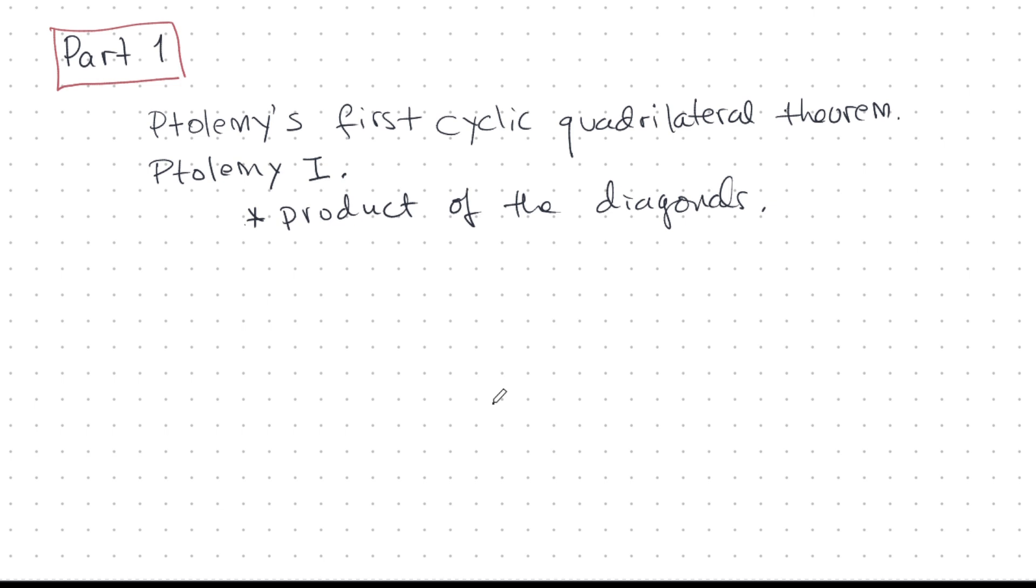Most of us have heard of Ptolemy's cyclic quadrilateral theorem. It's really famous, but there are actually two of these cyclic quadrilateral theorems by Ptolemy, and the second one is one that almost nobody's ever heard of. We'll call the first cyclic quadrilateral theorem Ptolemy I, and that is an expression about the product of diagonals.